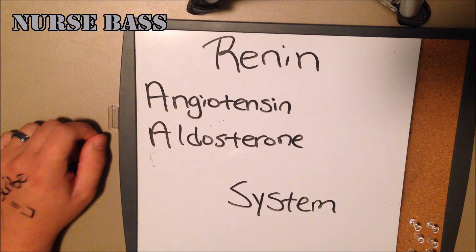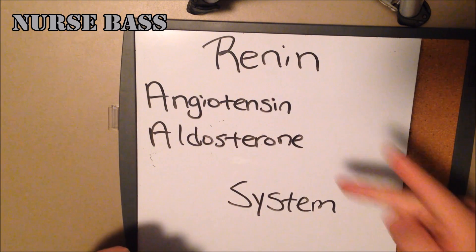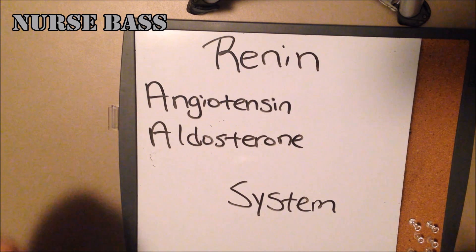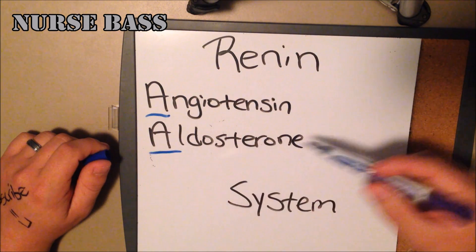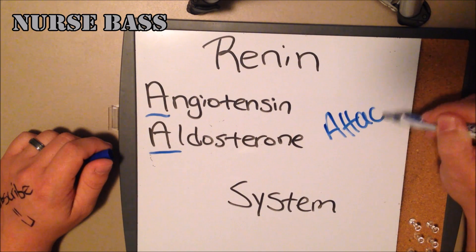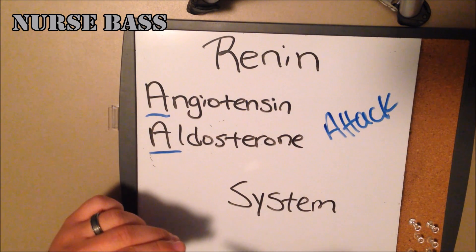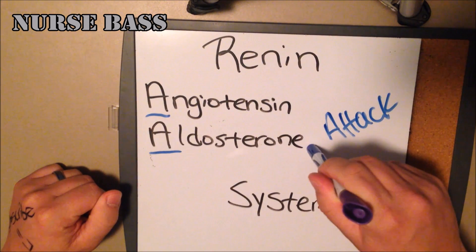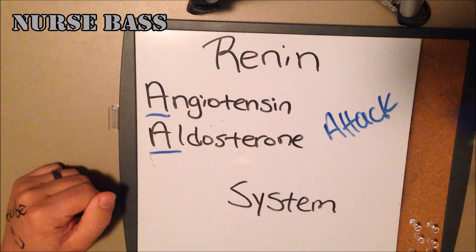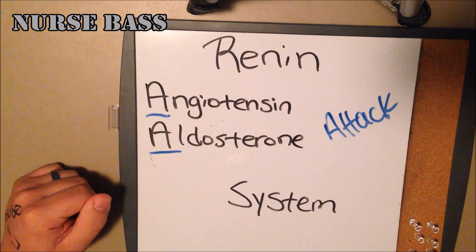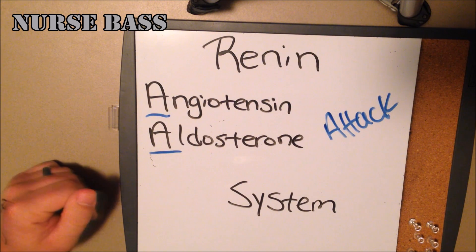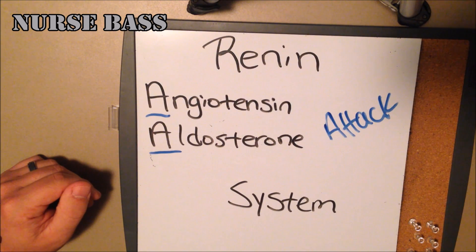The main objective is vasoconstriction to maintain blood pressure. There are two main mechanisms — this is a two-pronged attack. Think of the two A's: angiotensin and aldosterone. That's how it achieves vasoconstriction. Understanding the RAA system gives you a better grasp of how the body maintains homeostasis in regards to blood pressure.